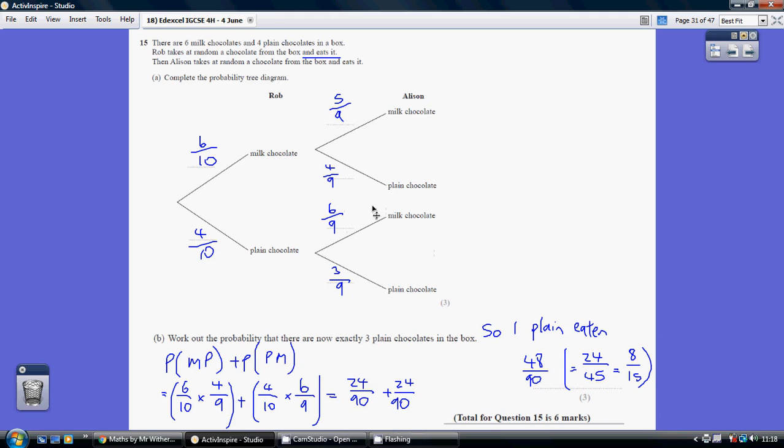Now, let's consider the 2 probabilities down here. This is when Rob has eaten a plain chocolate to start with. So, yep, there are 9 sweets in total, but what now are the chances of Alison having a milk chocolate sweet?